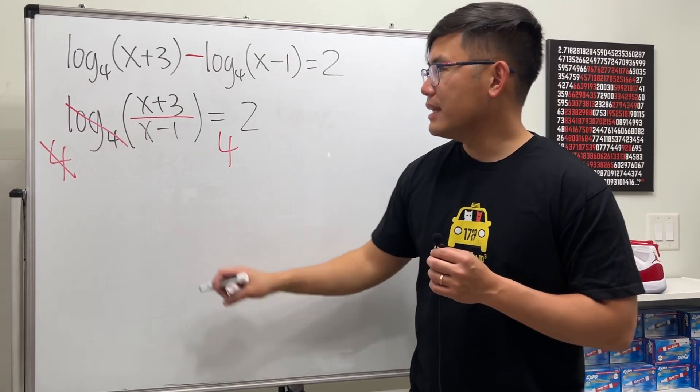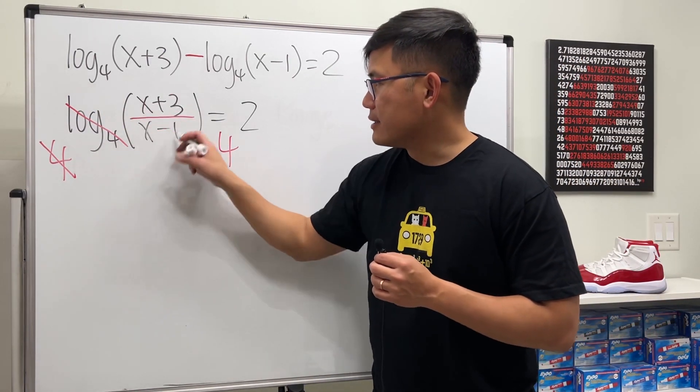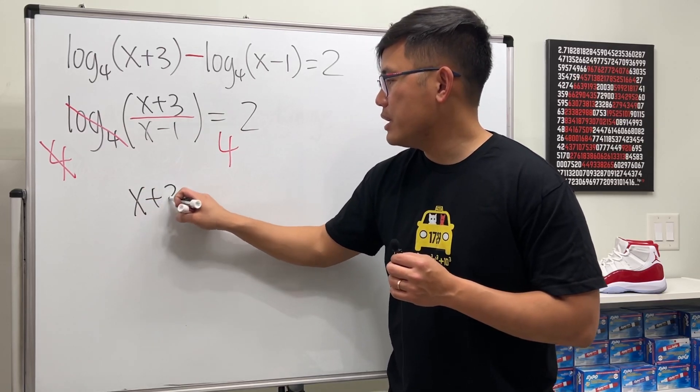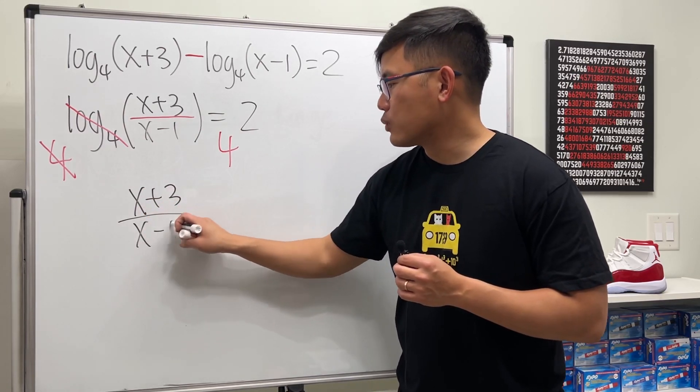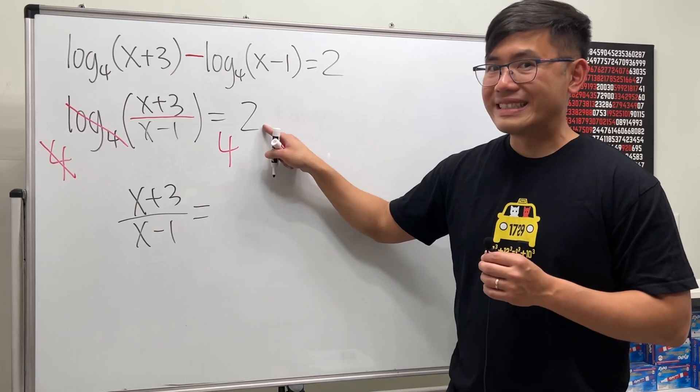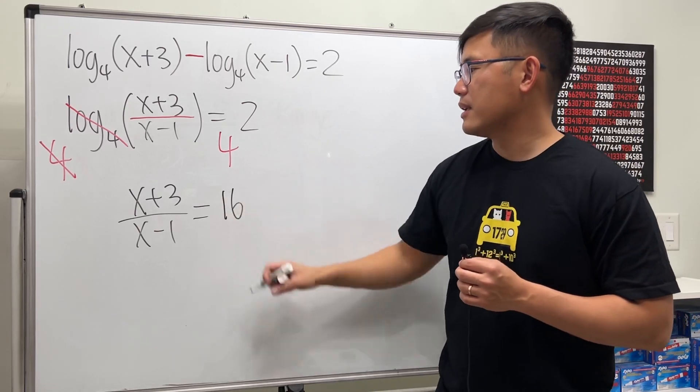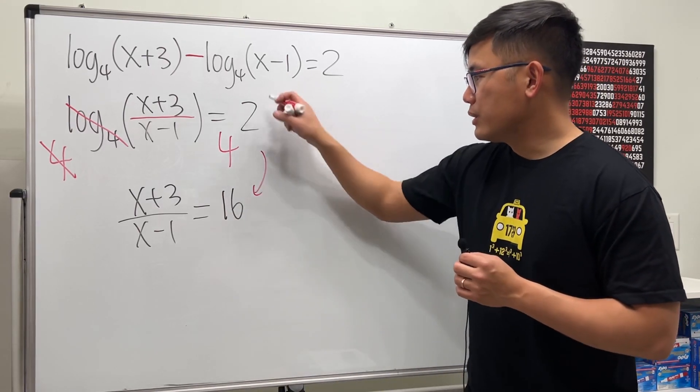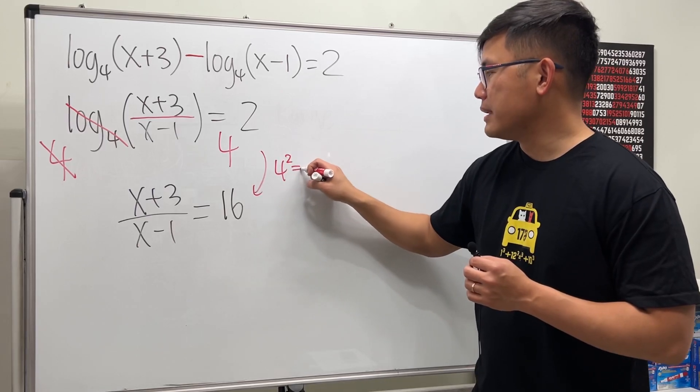So we're just looking at the inside, which is (x+3)/(x-1). And this is 4 to the second power, so that's 16. You look at this as 4 squared being 16.